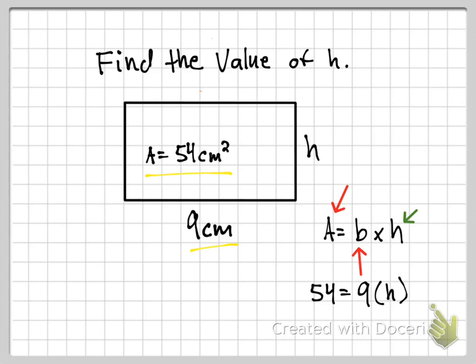From here I'll do some algebra to find the value of H. I divide both sides by 9 — the 9 cancels out, leaving H by itself. On the left side, 54 divided by 9 equals 6. So H equals 6 centimeters.